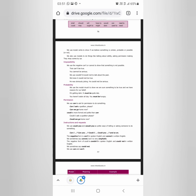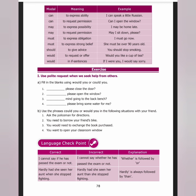Examples: 'can' — ability: 'I can speak a little Russian,' 'I can drive a car.' Also used for permission: 'Can I open the window?' 'May' — possibility: 'It may rain.' Also for permission: 'May I sit down?' 'Must' — obligation or strong belief. 'Should' — advice. 'Would' — polite requests. Exercises: 'Would you please close the door?' 'Would you please open the window?' 'Could you mind going to the back bench?' Fill in using would you or could you: ask directions to the railway station, lend a bike, exchange a book, open the classroom window.